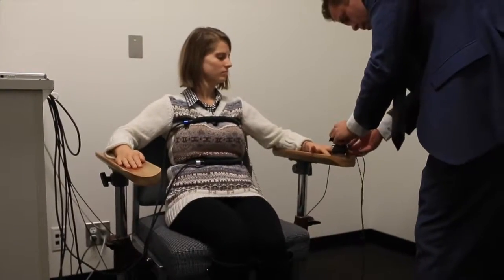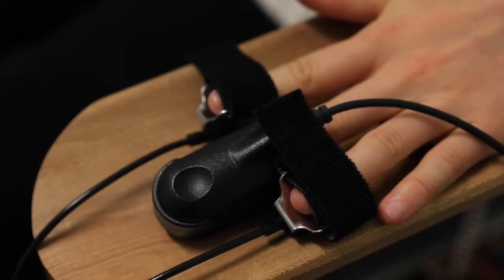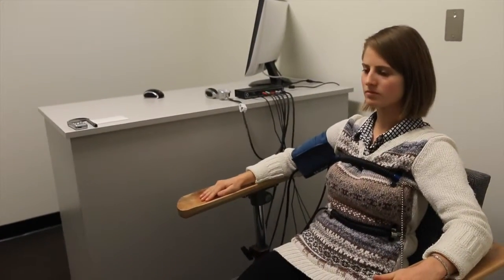One of the subject's hands is then put in a device that measures both heart rate and the sweatiness of the fingertips. The other arm is placed with a blood pressure monitor.